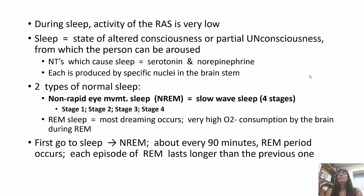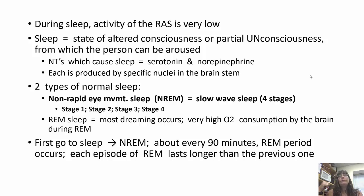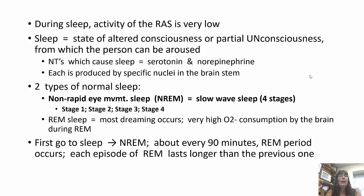During sleep, reticular activating system activity is very low. Sleep is a state of altered consciousness or partial unconsciousness from which you can still be aroused. Neurotransmitters that cause sleep include serotonin, norepinephrine, and melatonin — which we hear a lot about as a supplement. Melatonin is a derivative of serotonin. Each is produced by specific nuclei in the brainstem.